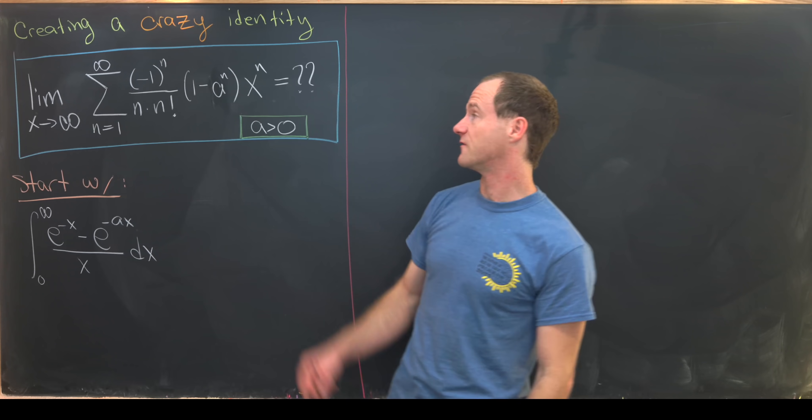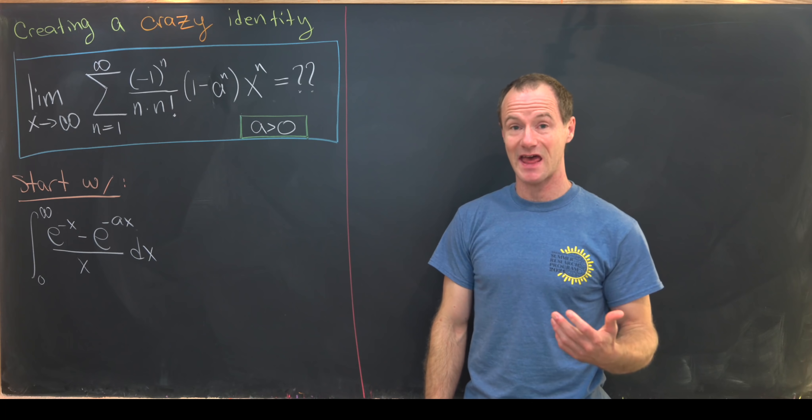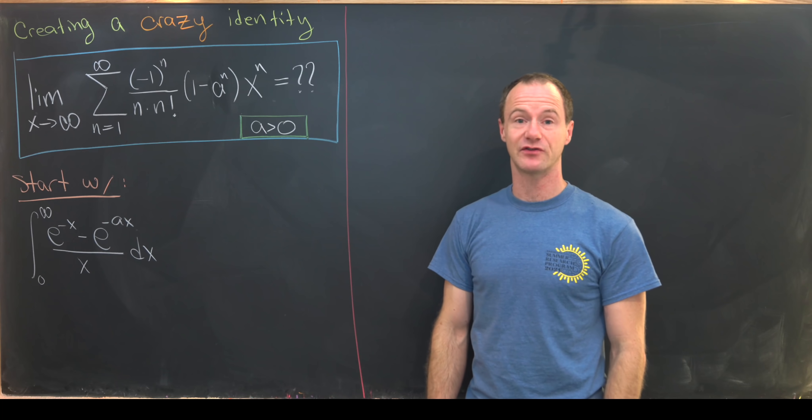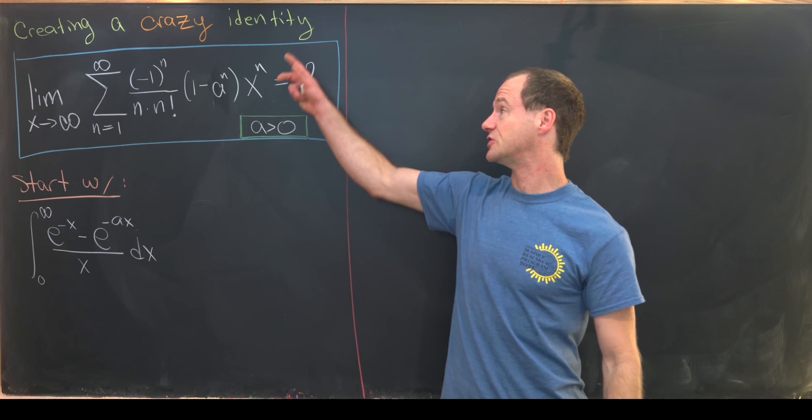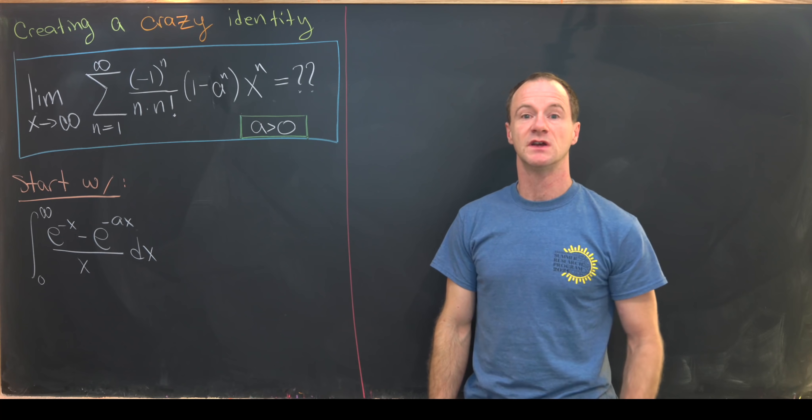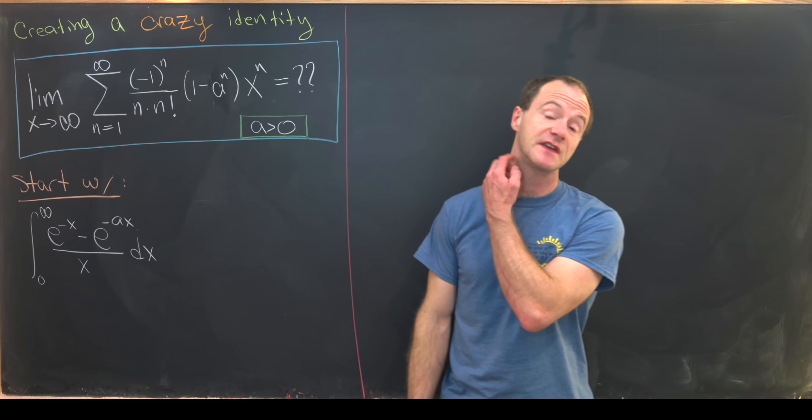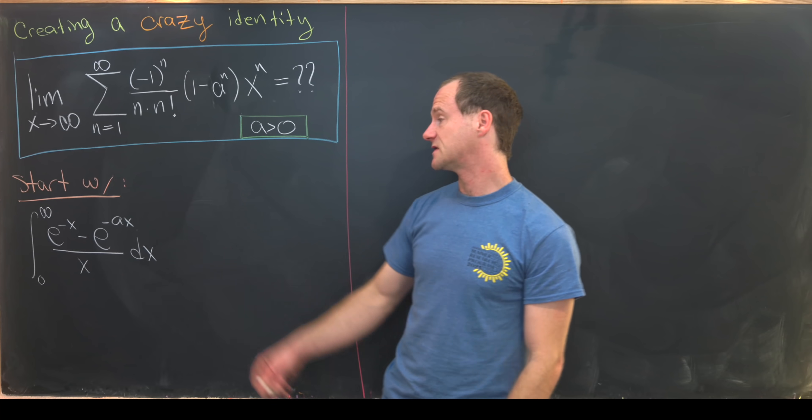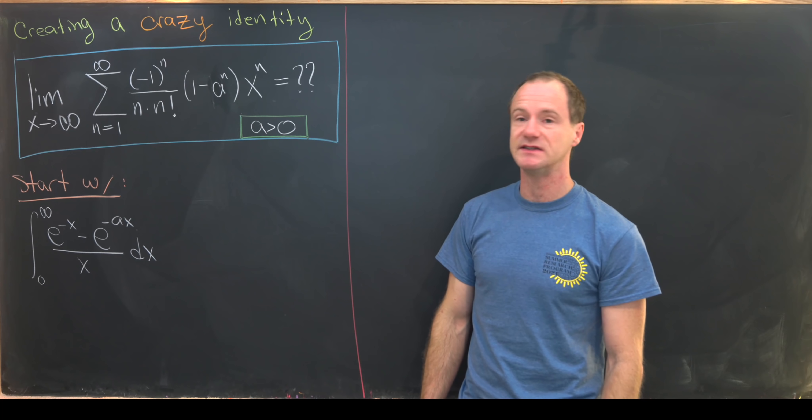Instead of giving a standard derivation of a closed form for something like this, we're going to start at a classic integral and see how this classic pretty simple integral can be derived into this crazy identity. The classic integral that we'll start with is the integral from 0 to infinity of e to the minus x minus e to the minus ax over x dx.